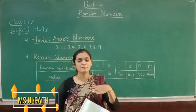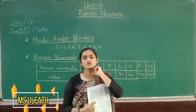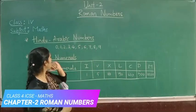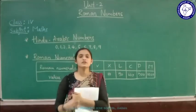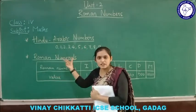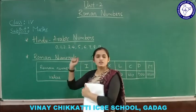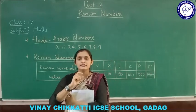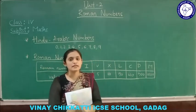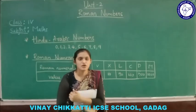Today, we will discuss Chapter 2 on Roman numbers. Before the Roman numbers, we will discuss the Hindu-Arabic numbers. Usually we use these numbers — the set of numbers from 0 to 9. These numbers actually originated in India and later spread around the world by Arab people, which is why these numbers are called Hindu-Arabic numbers.